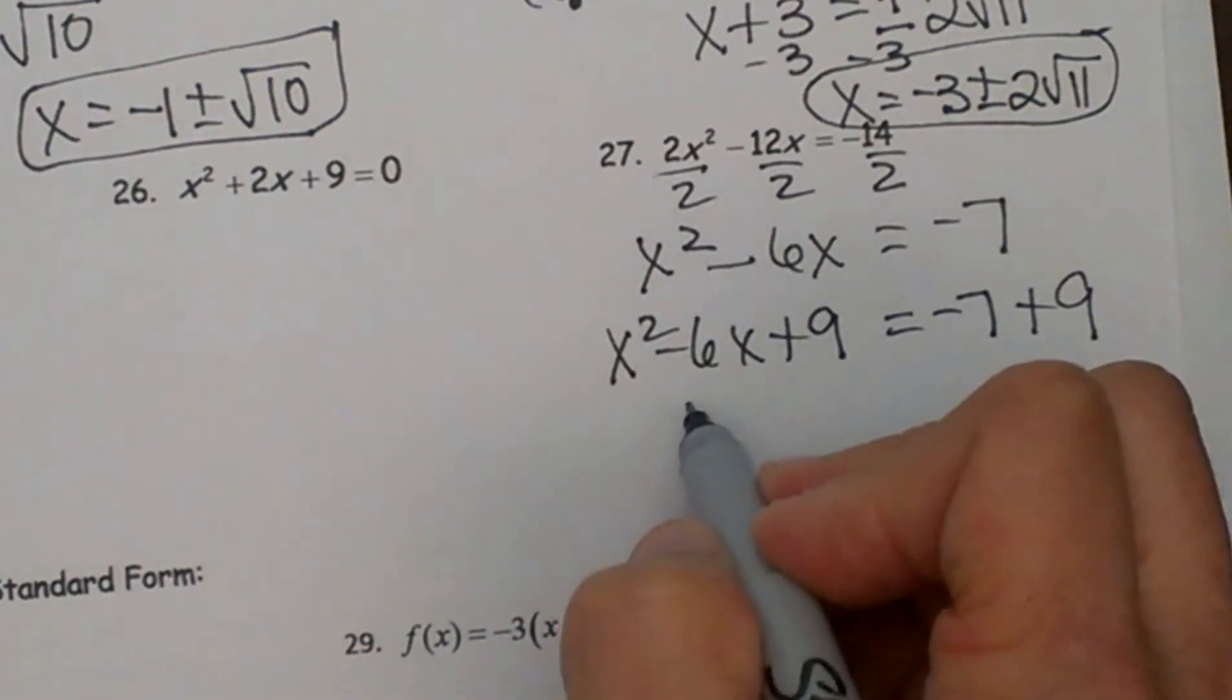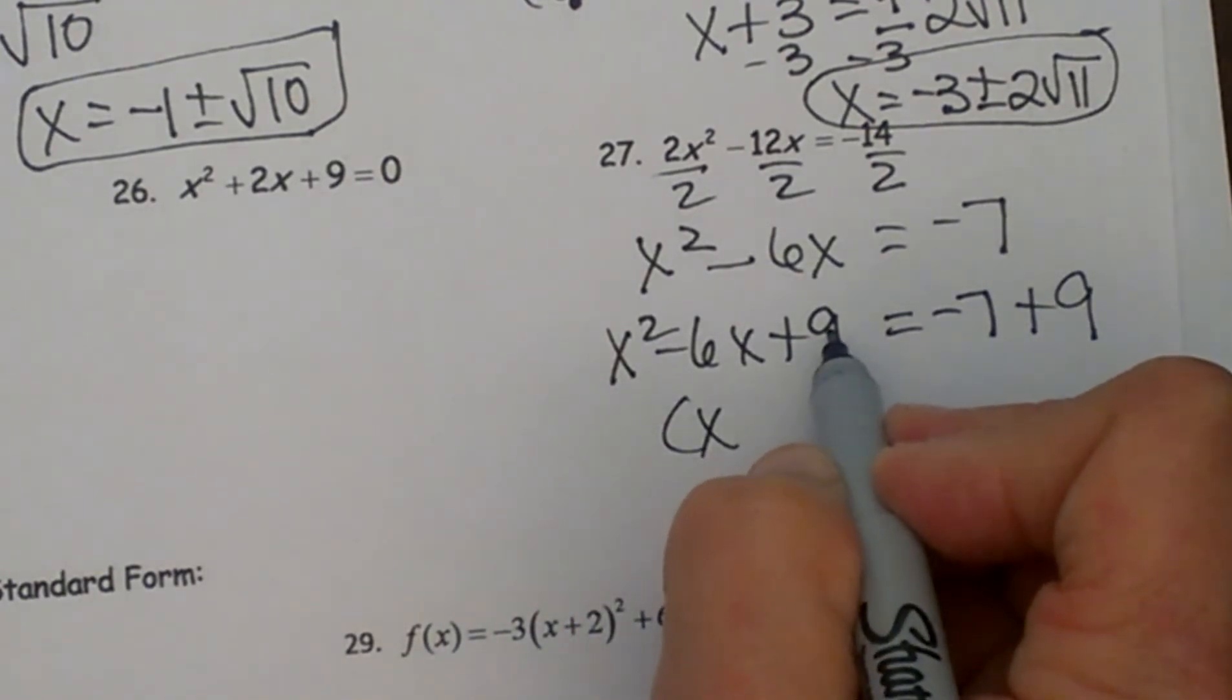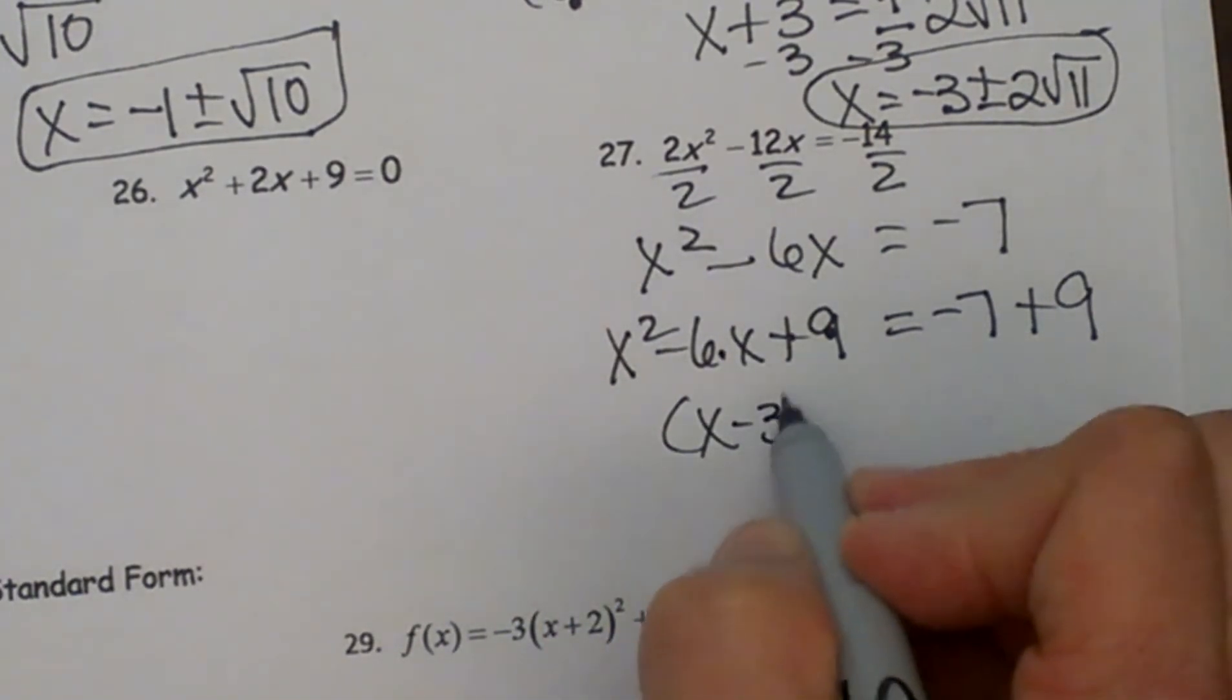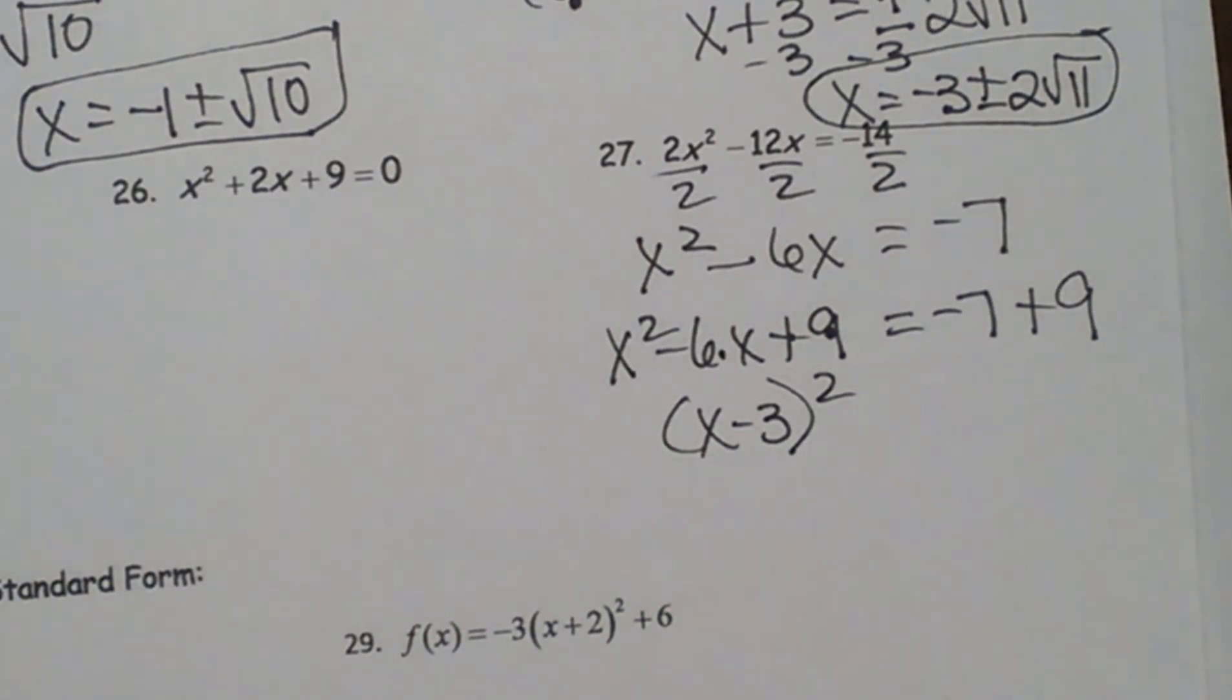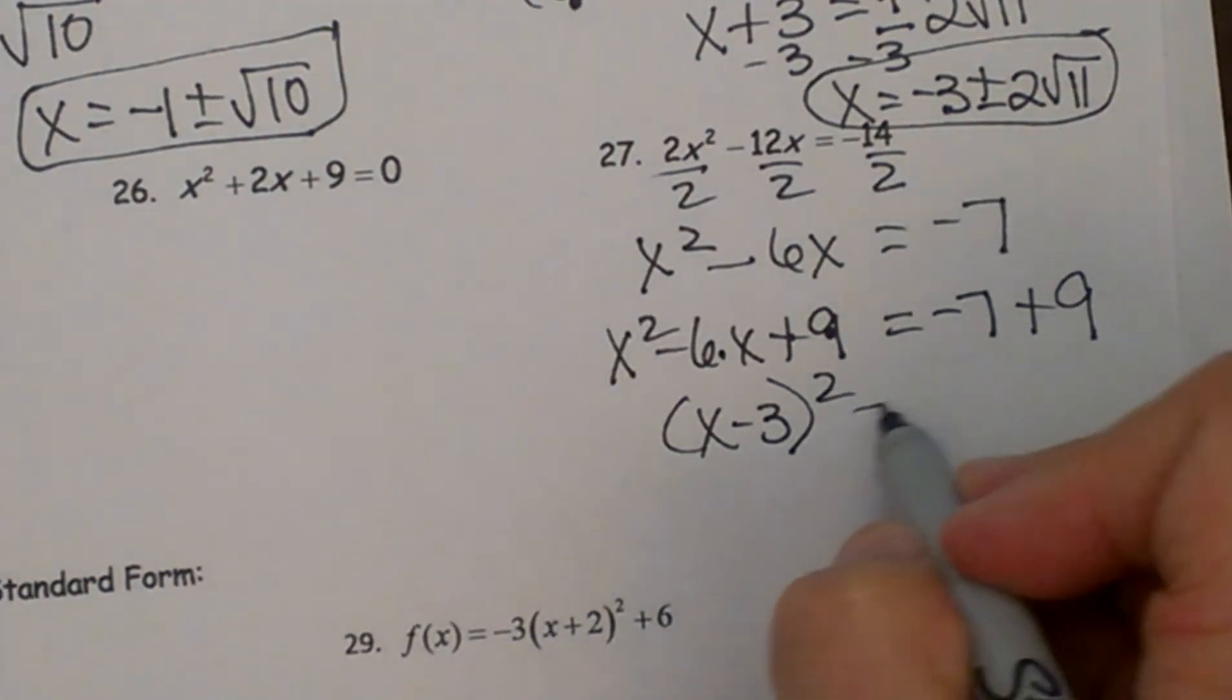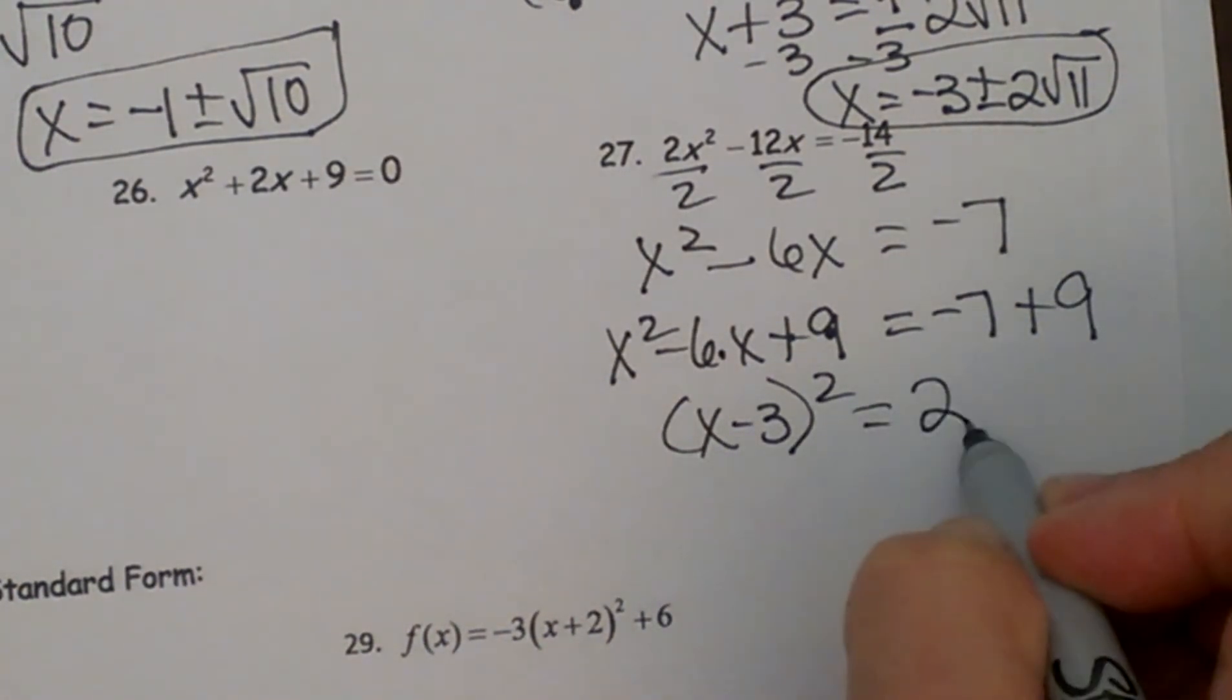Then this factors into what multiplies to 9 that adds to negative 6, and that is negative 3 times negative 3, so it is x minus 3 quantity squared is equal to positive 2. And then we just proceed with solving by taking the square root.